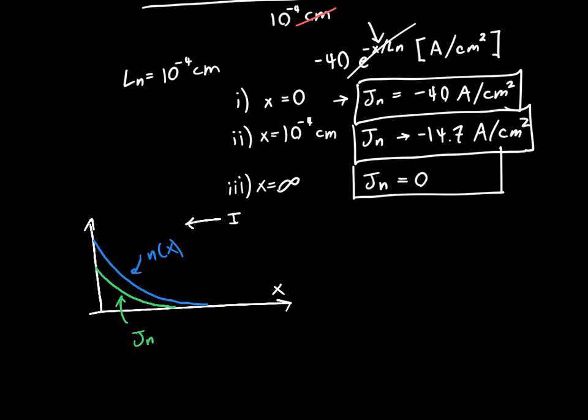So if we've got a constant current through the device, then initially the diffusion current is contributing primarily to the total current, and then we must have drift current over here. But that's outside the scope of this individual problem. We were able to solve it in its entirety.